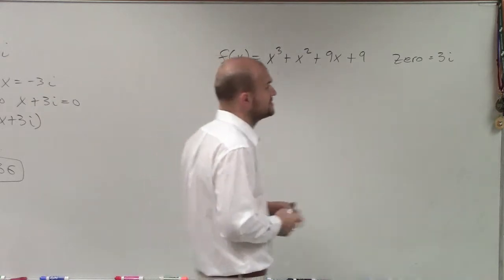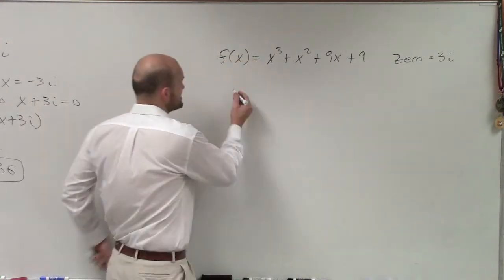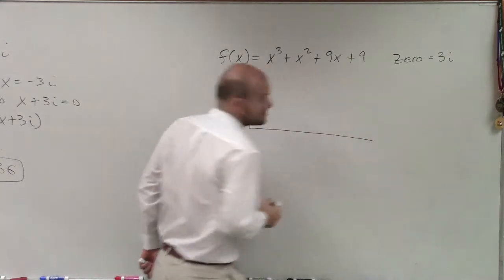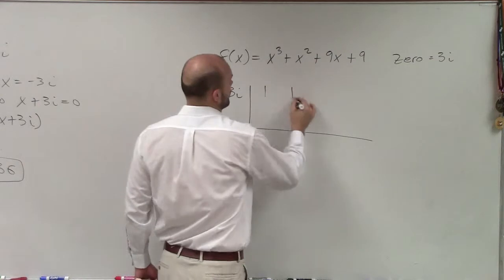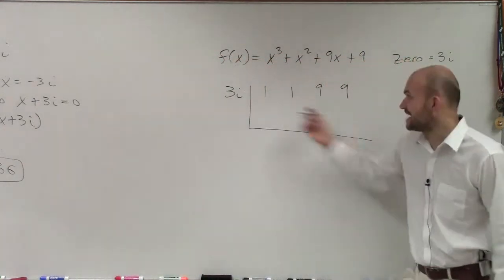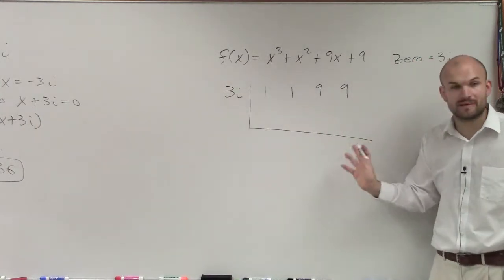So there's a couple of different ways you guys can do this. But if I'm telling you this is a zero, therefore that means by synthetic division, this is going to work. One, one, nine, nine. If that's a zero, that means I can use that on synthetic division and I will get a remainder of zero.